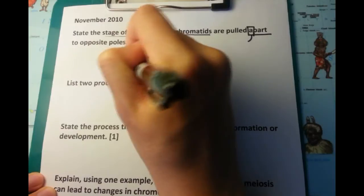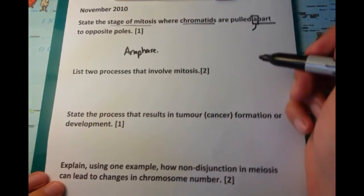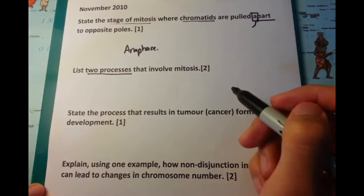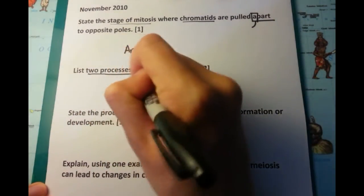The key point with this one is that state the stage of mitosis where chromatids are pulled apart. And because it starts with A, you remember that A is involved with anaphase. Anaphase. Easy mark.